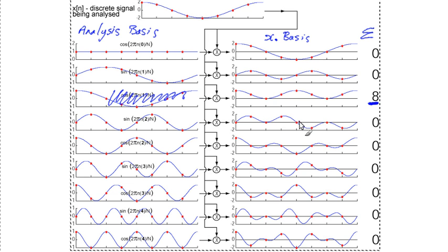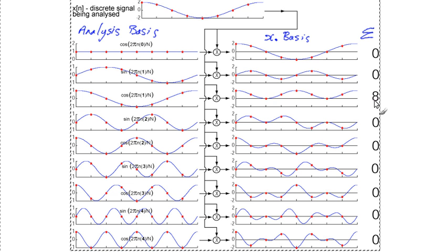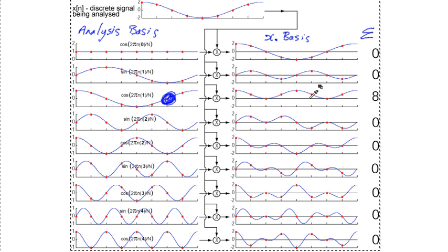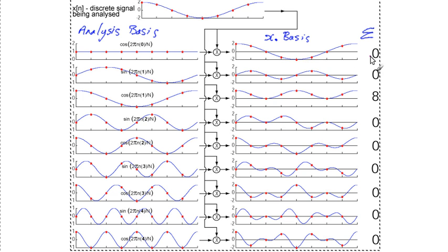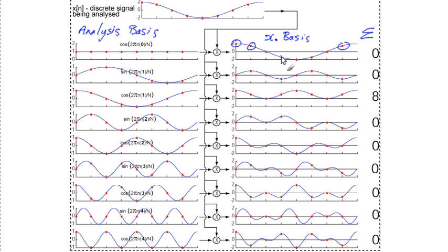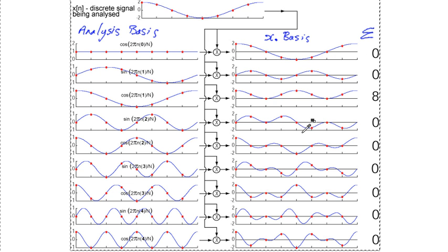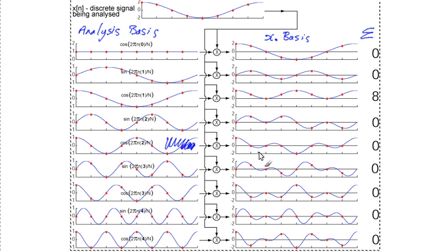The correlation process produces a non-zero value if the signal contains the basis function that I multiply by. For all other cases I get values of zero. By adding samples together I get a value of zero because I've got three positive values that are cancelled by three negative values, plus two zero values. For another multiplication, we get a positive value, a negative value, and lots of zero values, and the positive and negative cancel out to give zero. That indicates that the correlation process actually works.